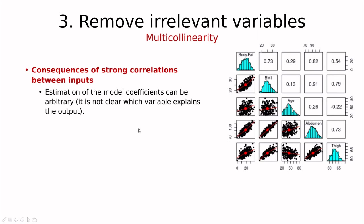And the problem is that the estimation of the coefficients can be arbitrary. The point is that if abdomen and thigh are so highly correlated when you are saying that increasing for instance 10% or from 50 to 56 for instance thigh you're increasing body fat by a given amount, maybe this is wrong. Maybe this is because this is affecting abdomen and abdomen is affecting body fat.